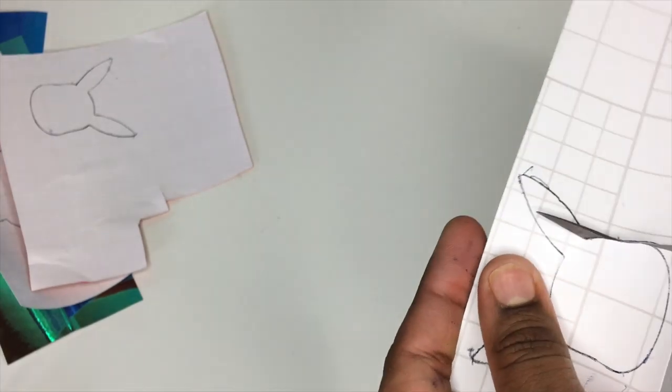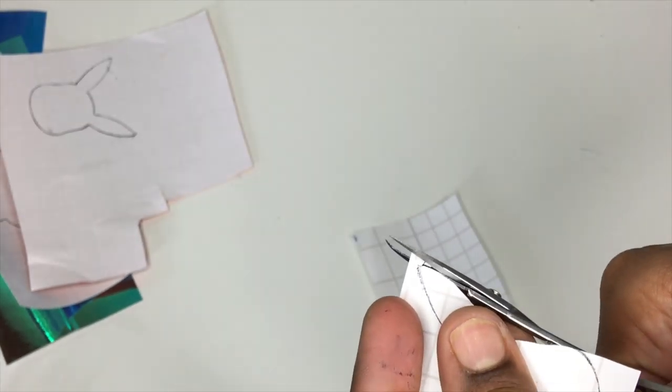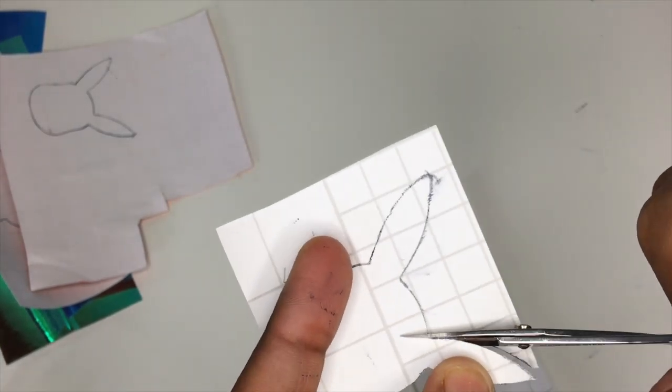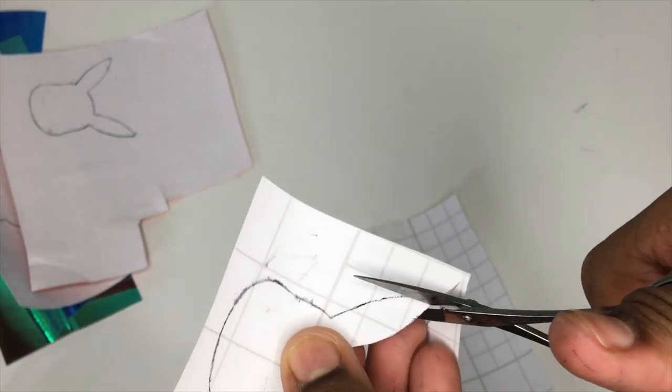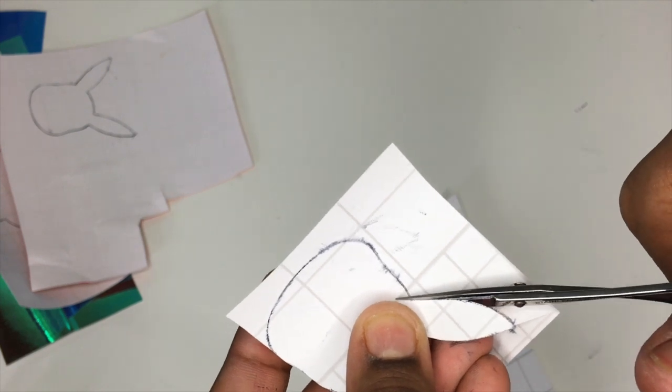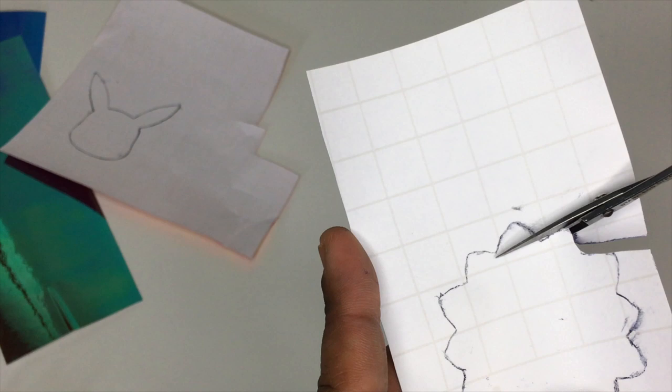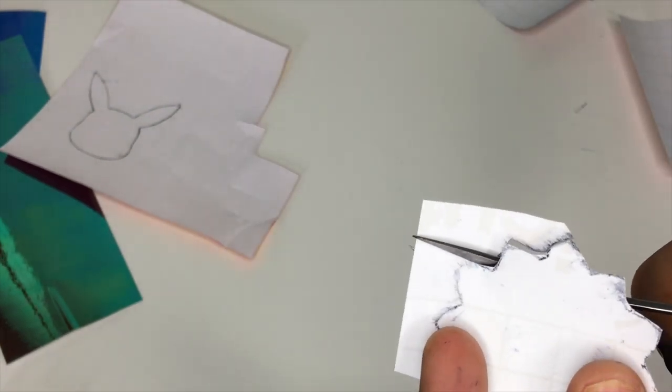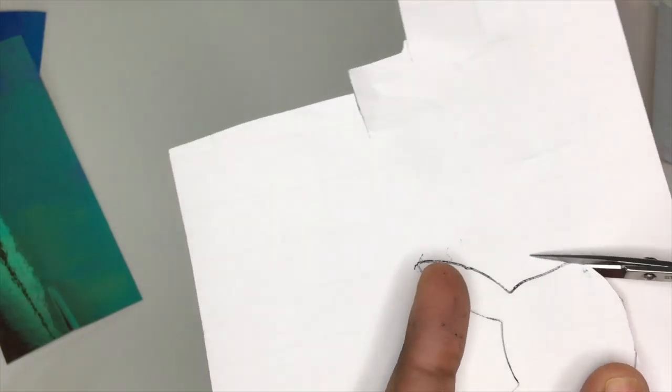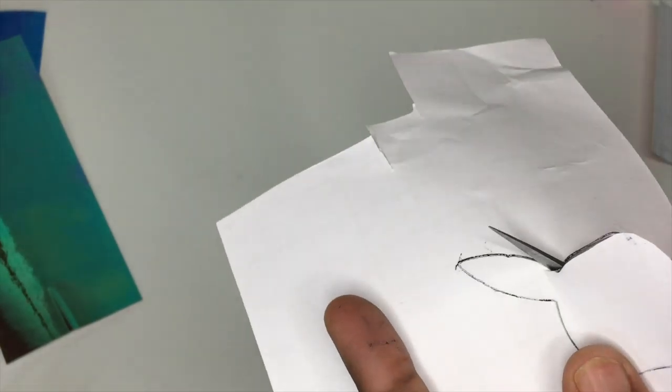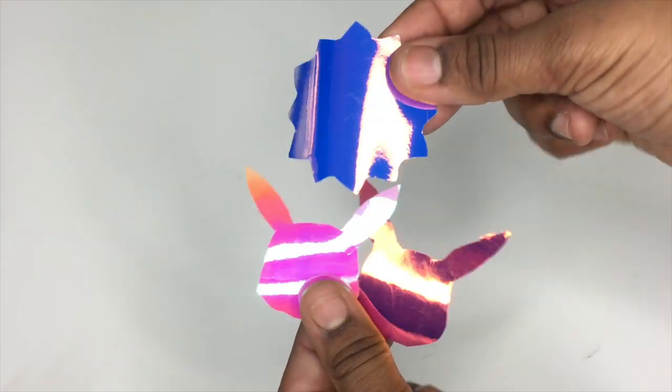So now I'm going to take my scissors and start cutting around the tracing. You want to get this cut as close as possible because like I've said before, if you don't it can kind of get a little bit janky. And this is what they look like once they've all been cut.